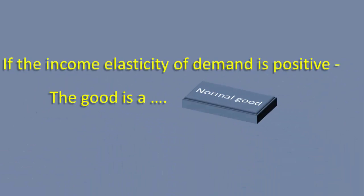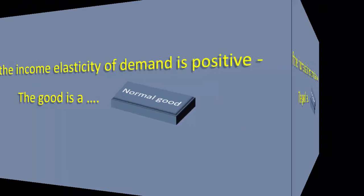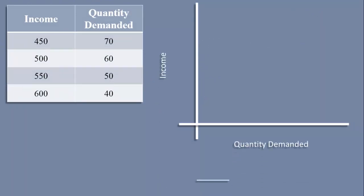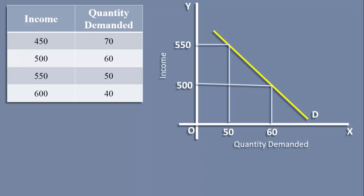The thing we have to keep in mind is: if the income elasticity of demand is positive, then that good is said to be a normal good. In the case of an inferior good, the income demand is negative. The income demand curve slopes downwards from left to right.